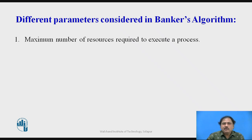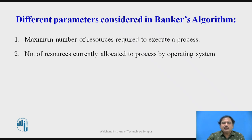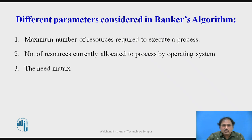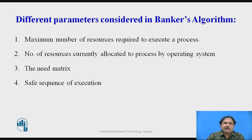The different parameters used in this Banker's Algorithm are: the maximum number of resources required, as defined by each process; the number of resources currently available in the operating system; and how many resources have been allocated by the OS to each process. From these parameters we can find a new term called the need matrix, and from this Banker's Algorithm we find the safe sequence of execution.